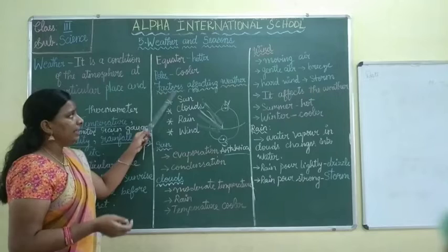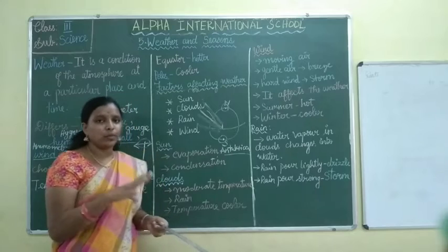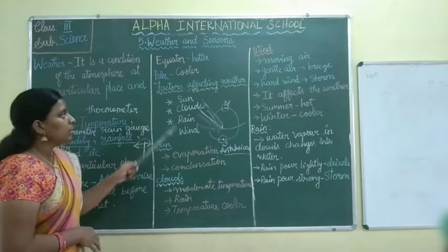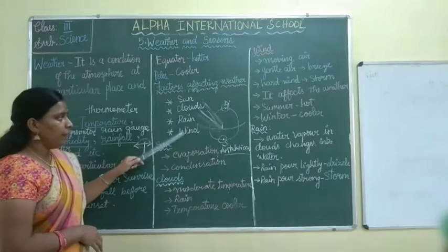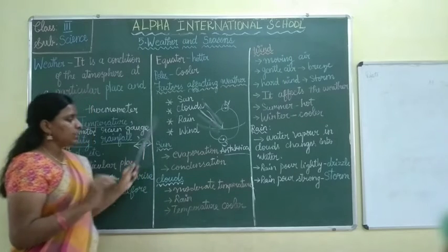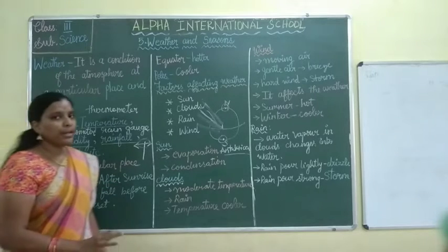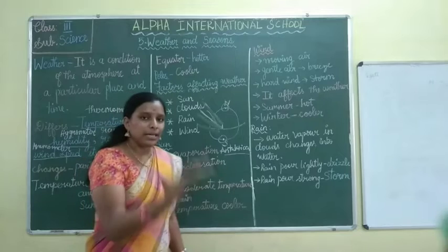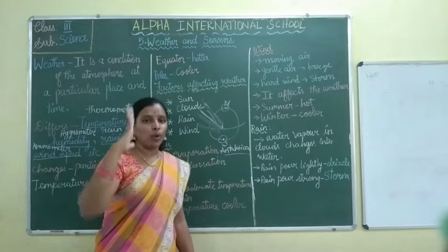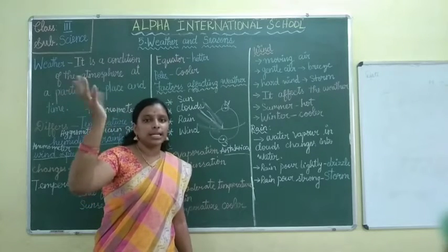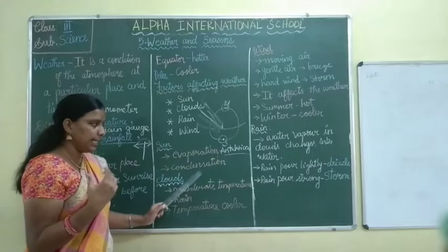Now we are going to see factors affecting the weather. What are the factors? What are the things that will make the weather? They are sun, clouds, rain, and wind. First, sun — it is done by evaporation and condensation. The sea will evaporate as water vapour, it will move out to the clouds, and that water vapour forms into rainfall. That is called evaporation and condensation.